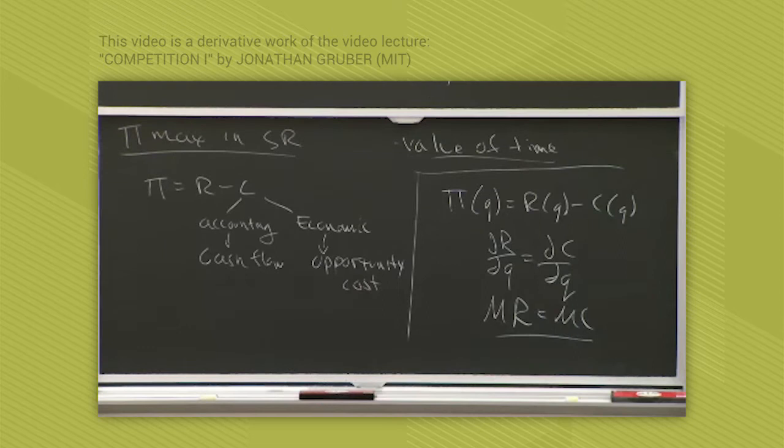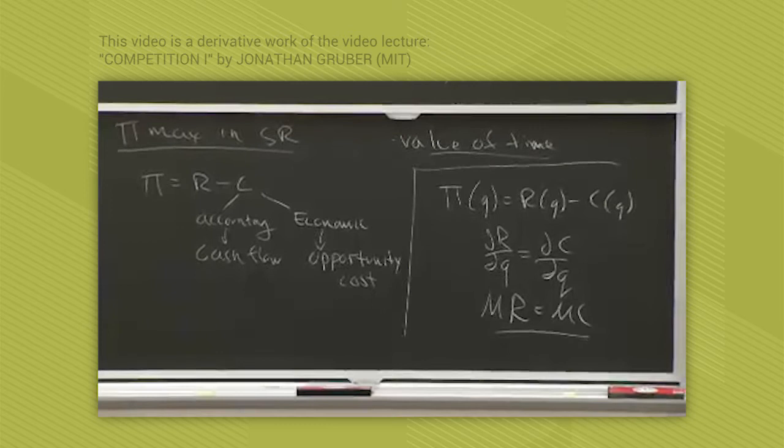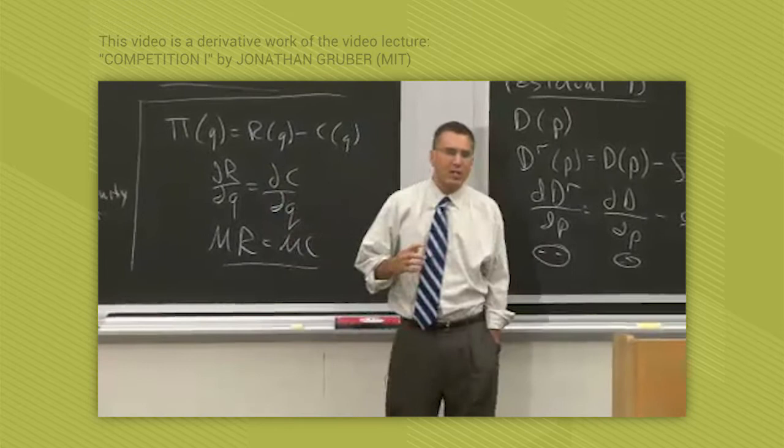Well, in a competitive market, we know what dR/dq is. Because in a competitive market, dR/dq is given to the firm by the market. In a competitive market, dR/dq, or marginal revenue, equals the price.